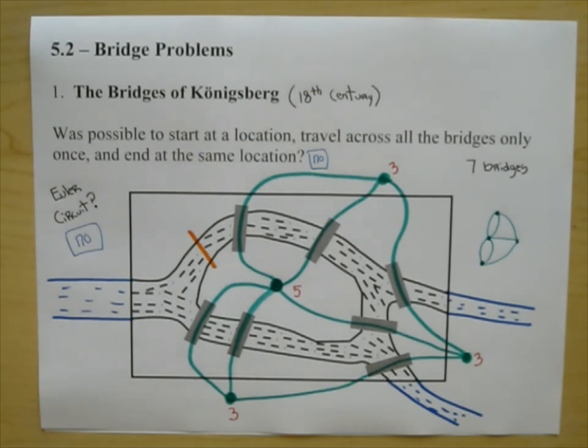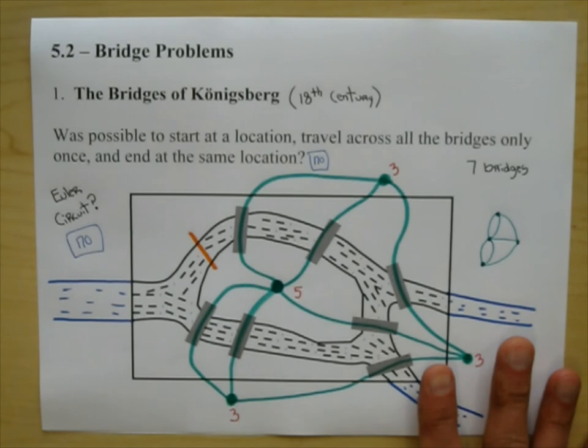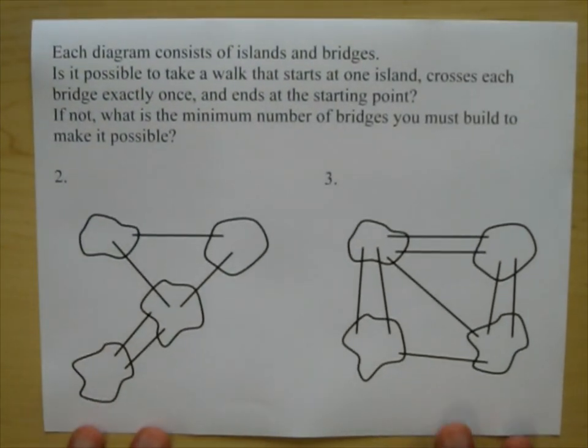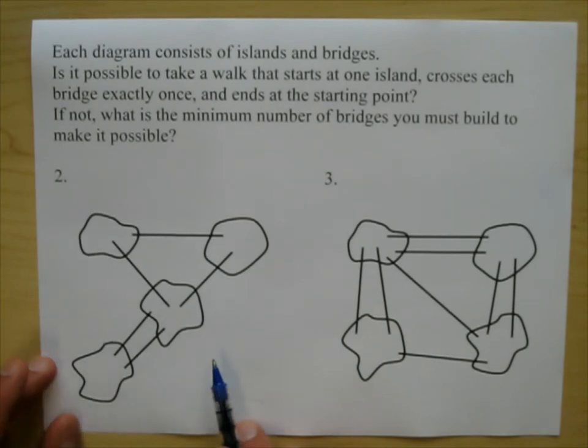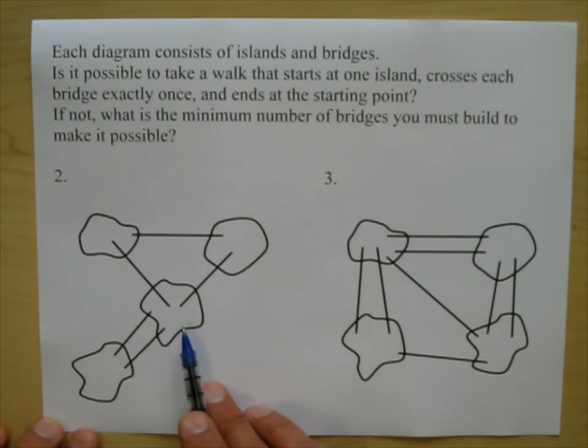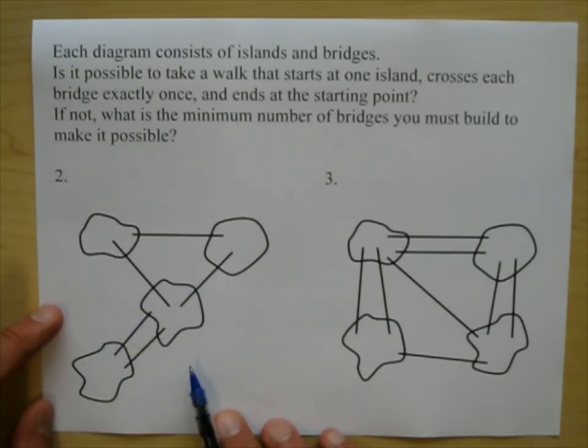And we are now going to do some bridge problems. So let's see if I can find the piece of paper. This is a bit of a short section. And 5.3 will also be a short section. So we are going to actually ask the same types of questions. But instead of going off of a river, I am going to make some bridges and some islands. And that is what we are going to do. So, let's go ahead and do these problems. Each diagram consists of islands. So here's four islands here. And bridges. Those are the lines. Is it possible to take a walk that starts at one island, crosses each bridge exactly once, and ends up at the starting point? Follow-up question. If not, what is the minimum number of bridges you must build to make it possible?